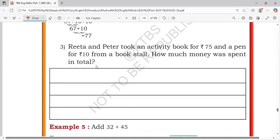Rita and Peter took an activity book for 75 and a pen for 10 rupees from a book stall. How much money was spent in total? That means 75 just add like this 10. 5 plus 0, 5. 1 plus 7, this is 8. Total they gave 85 rupees.